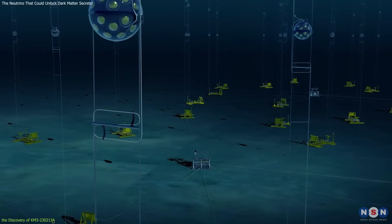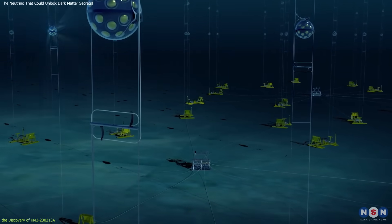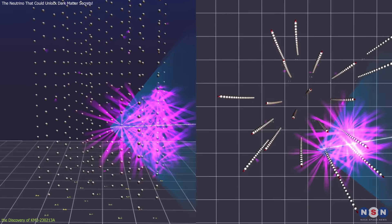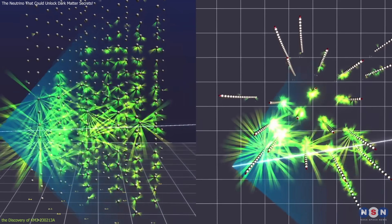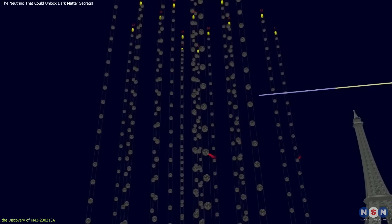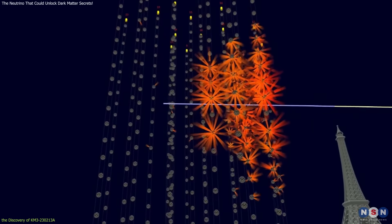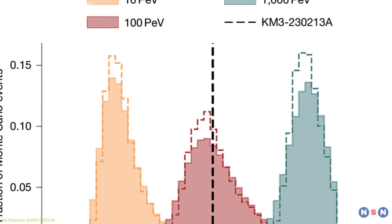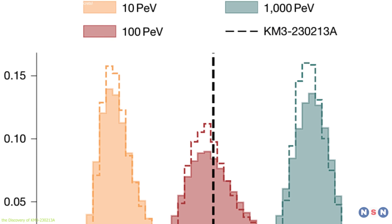On February 13, 2023, the KM3Net Observatory recorded the detection of KM3-230213A, a neutrino with an astonishing energy level of 220 PEV. For context, this is over 100 times the energy of the highest energy neutrino previously detected.